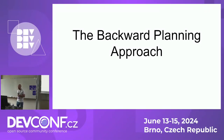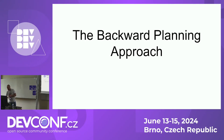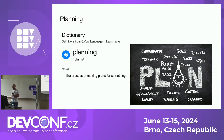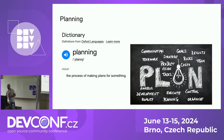Let's talk about the backward planning approach. Planning, from the Oxford Language Dictionary, is a process of making plans for something. So when you want to make some plans to reach your goals, you probably should do some planning.